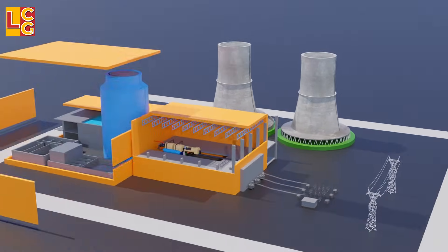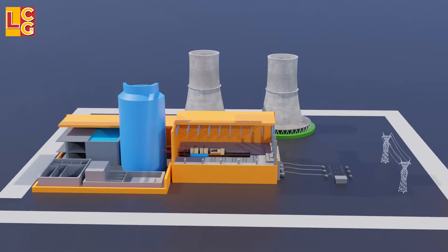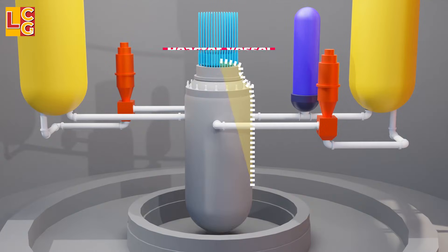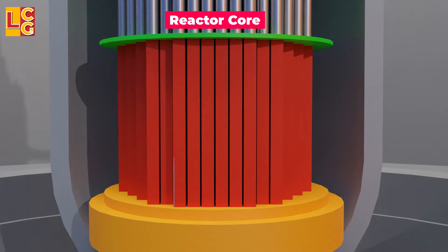Let's look at its major parts first before its mechanism. This is the reactor vessel, where the reactor core is located.